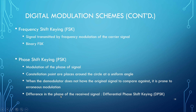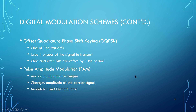The difference in the phase of the received signal gives us Differential Phase Shift Keying (DPSK). Offset Quadrature Phase Shift Keying (OQPSK) is one of the PSK variants. It uses four phases of the signal to transmit, but only two are used at a time because the signals are out of phase by 180 degrees. Odd and even bits are offset by one bit period to ensure that in-phase and quadrature components never change at the same time. Pulse Amplitude Modulation (PAM) is an analog modulation technique that changes the amplitude of the carrier signal; at the modulator, the demodulator detects the amplitude of the carrier at each symbol period.